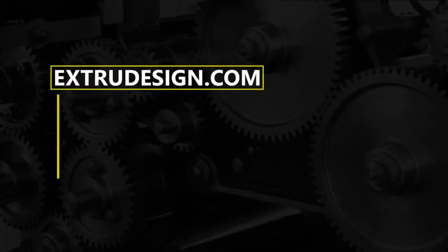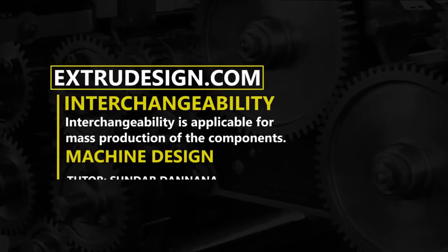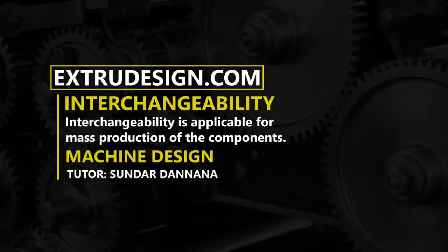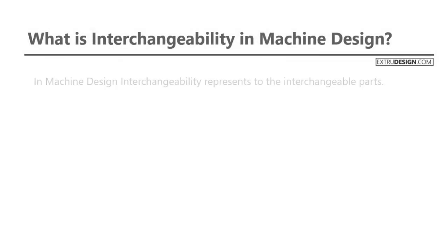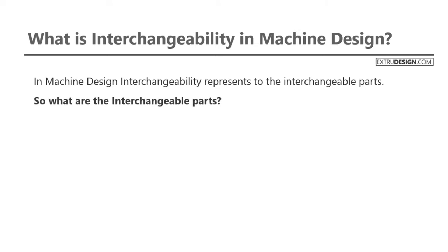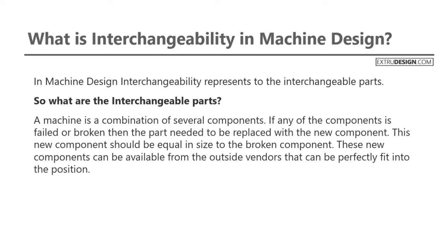Welcome back to x2design.com. In this video we are going to discuss interchangeability in machine design. Interchangeability refers to interchangeable parts. A machine is a combination of several components. If any component fails or is broken, it needs to be replaced with a new component equal in size to the broken one. These new components can be available from outside vendors and can perfectly fit into the position.